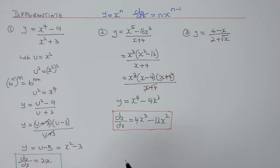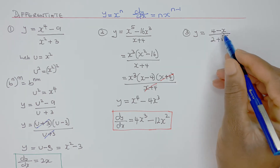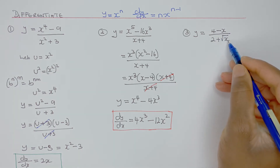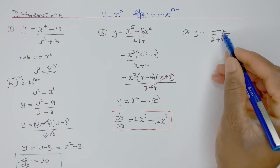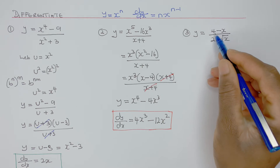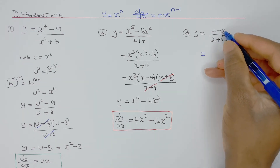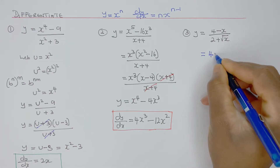Question 3 is a bit challenging because you have 4 minus x over 2 plus root x. This root x is actually giving me a clue with the 4 — that I can create a difference of two squares from the numerator.